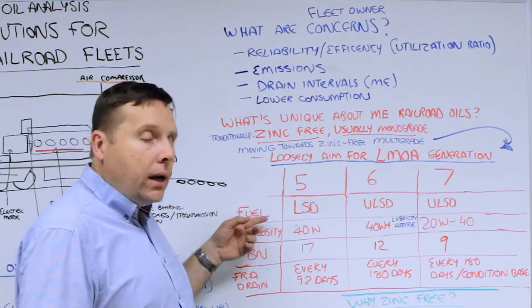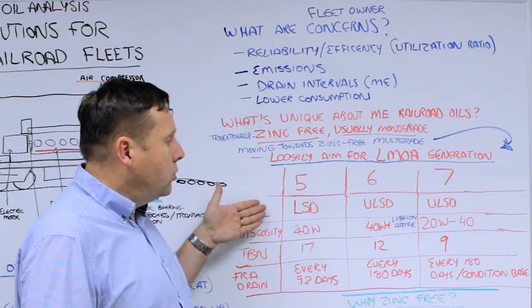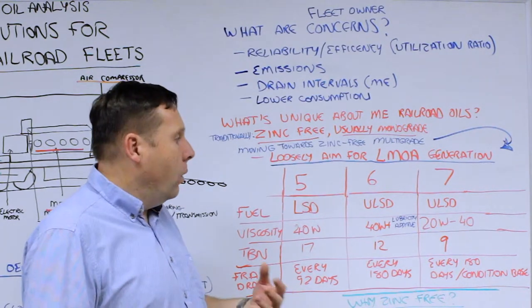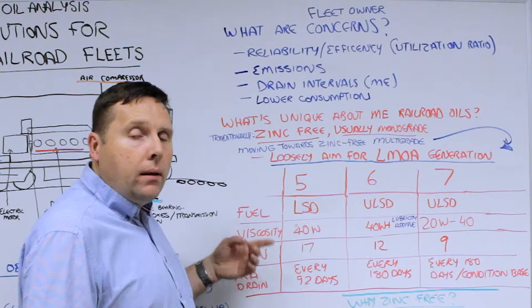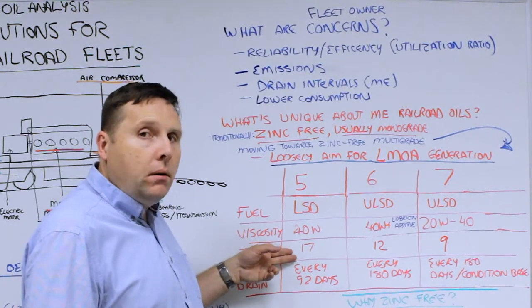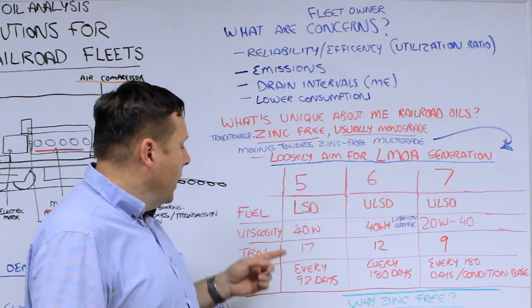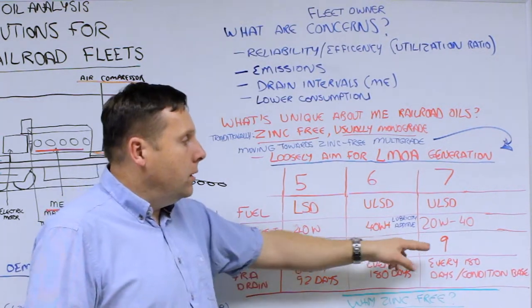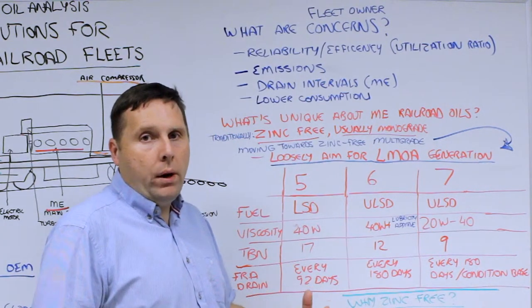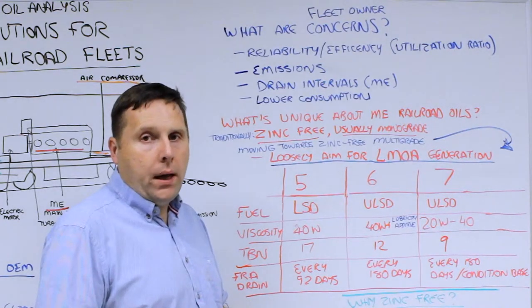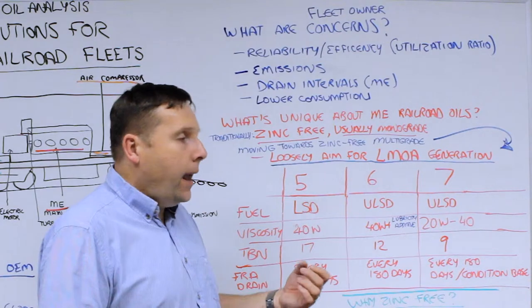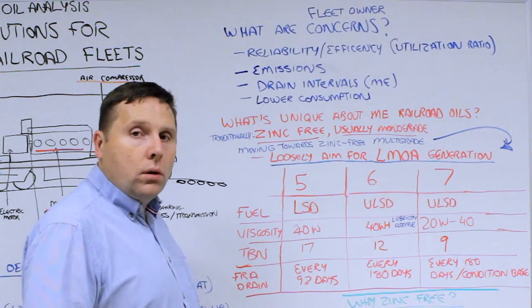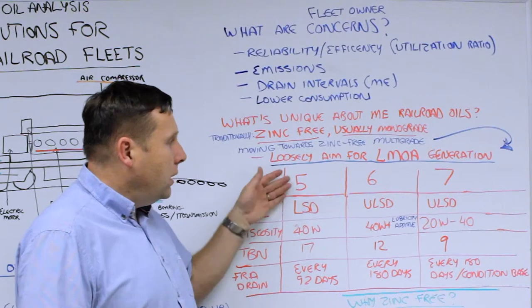LMOA has different generations or classes of oil. Looking at the three major classes from Gen 5 to Gen 7, which is the latest, you can see lubricants have been designed to manage the transition from low sulfur diesel at 500 ppm and below to ultra-low sulfur diesel at 15 ppm. This is important because it affects TBN on new oil, going from about 17 brand new to now a 9 base number starting point. Viscosity is changing from 40 weight single weight to 40 weight with lubricity additive, to now 20 weight 40 weight multi-grade oils new to railroad applications.